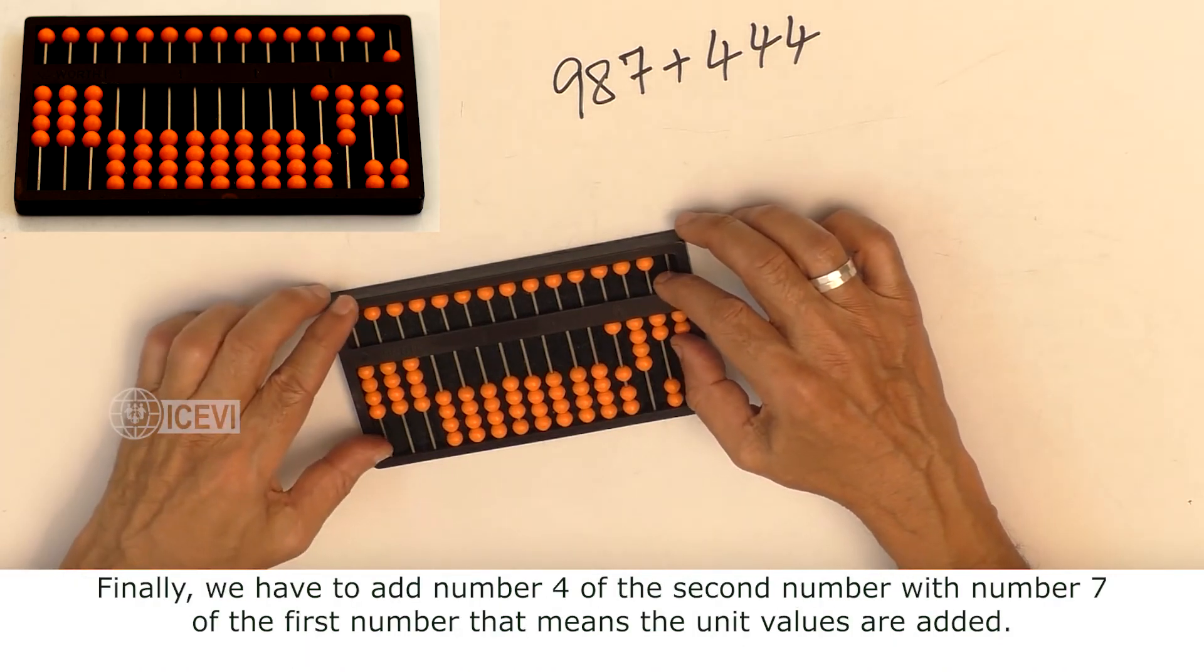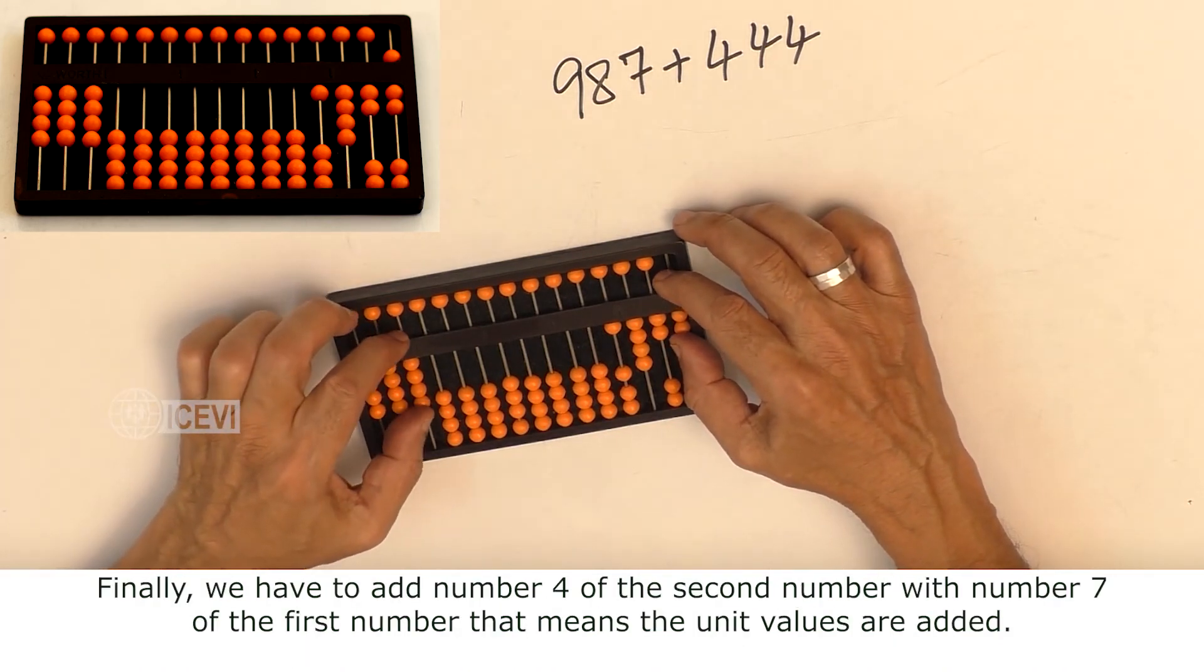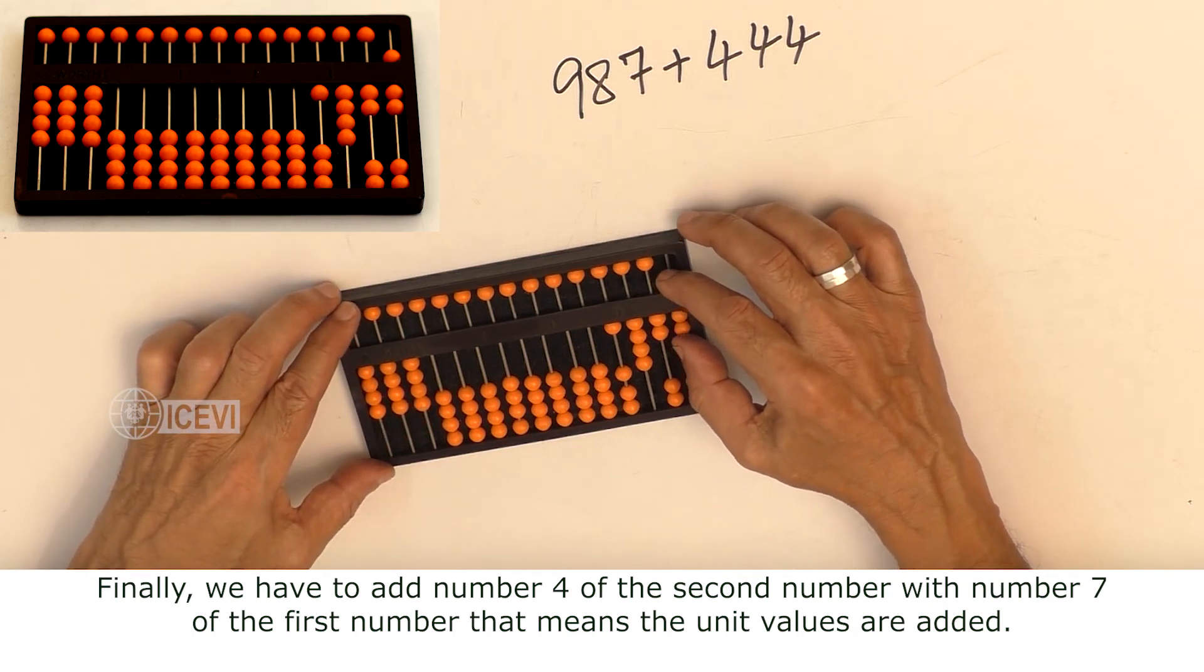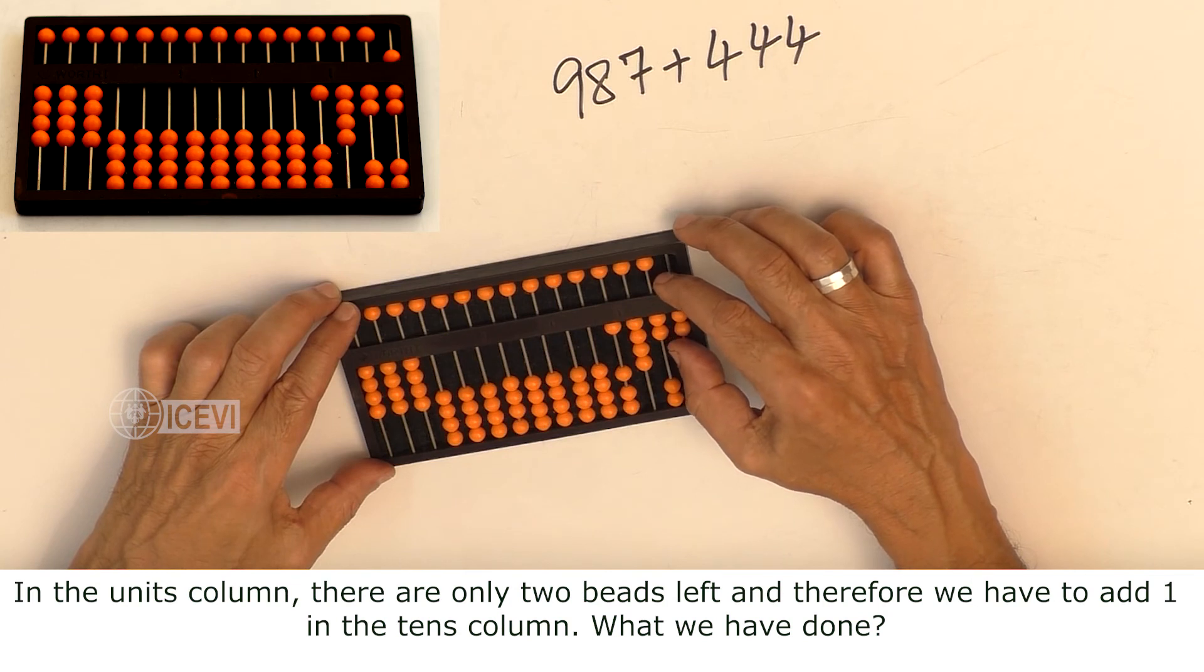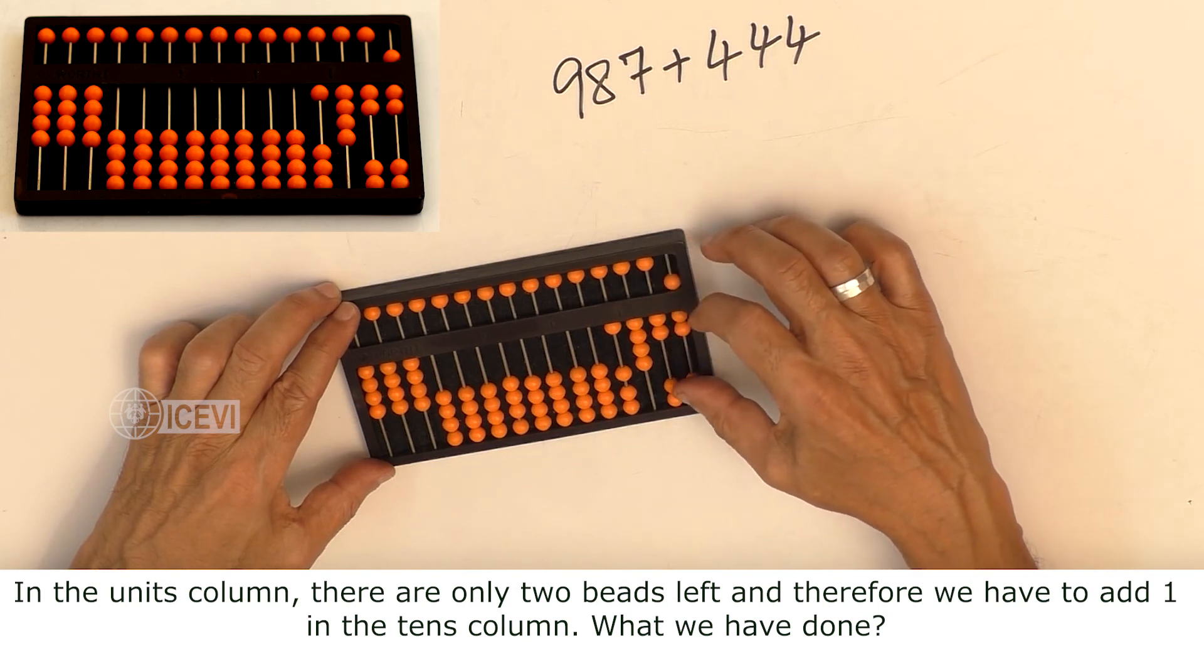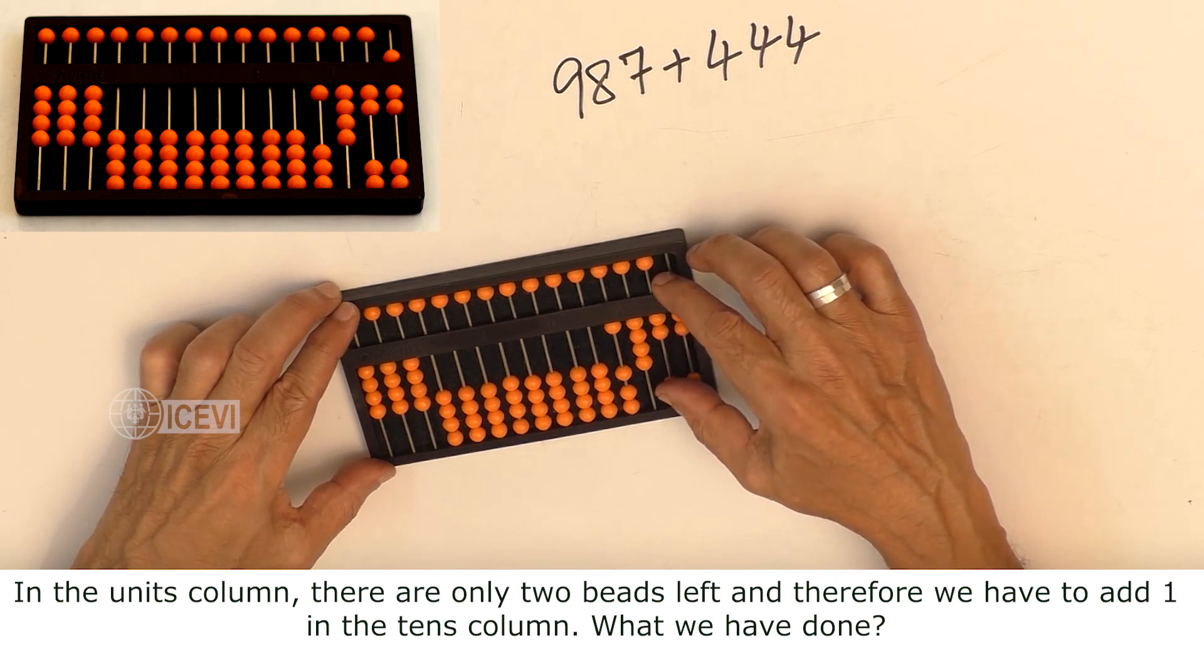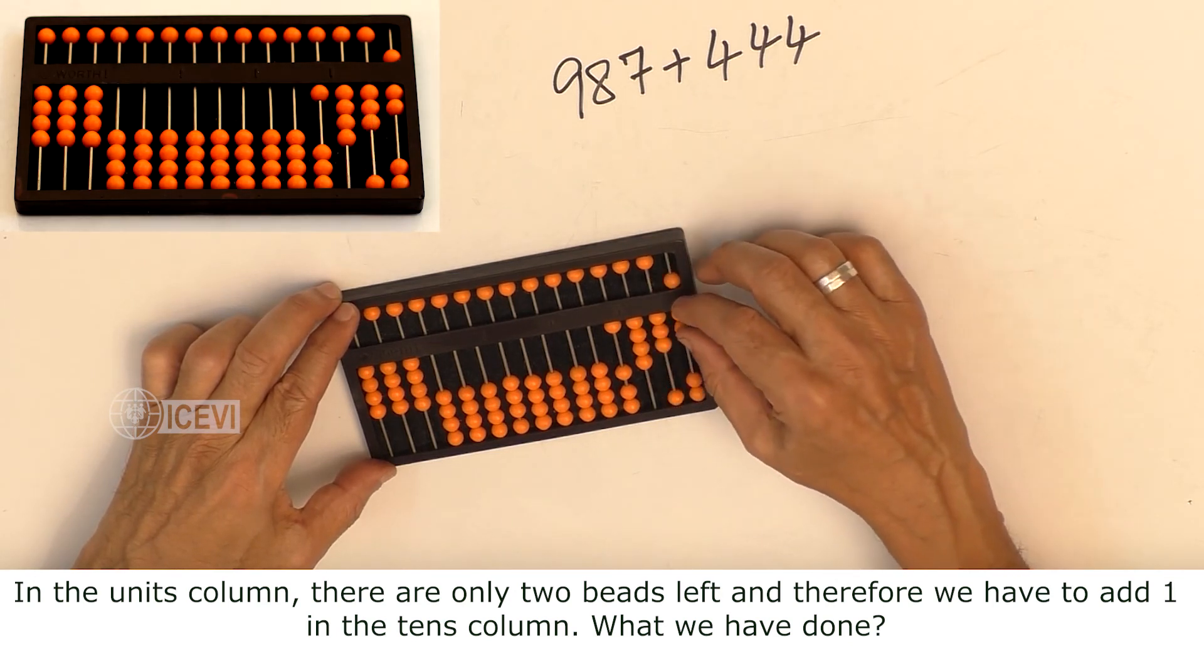Finally, we have to add number 4 of the second number with 7 of the first number. That means the unit values are added. In the units column, there are only 2 beads left, and therefore we have to add 1 to the tens column.